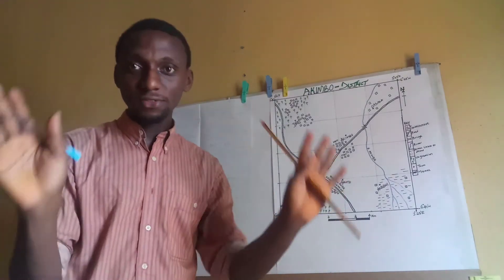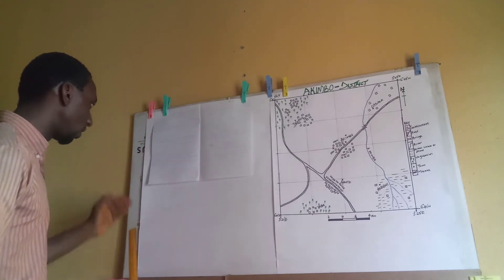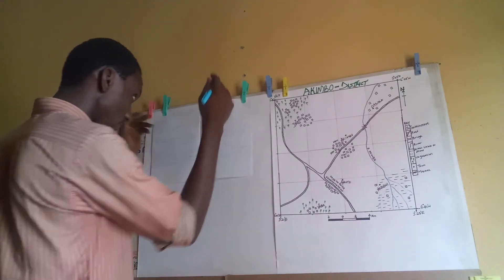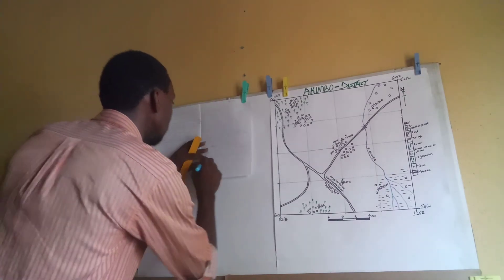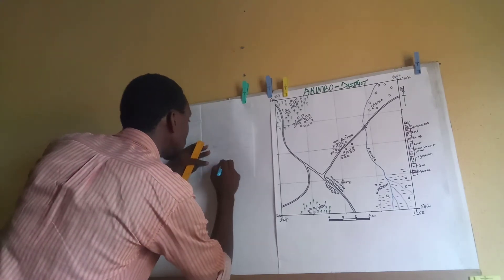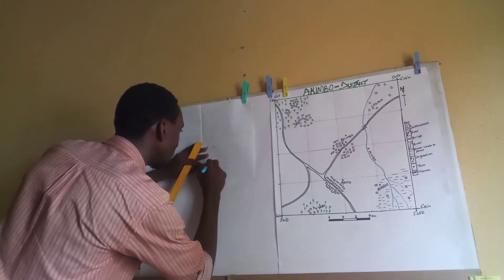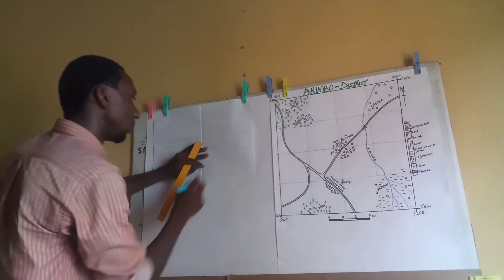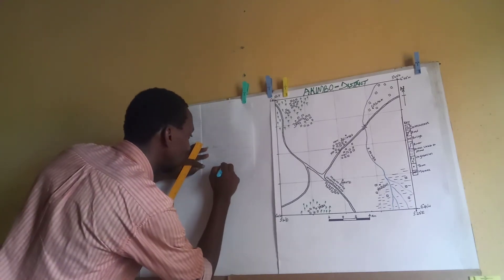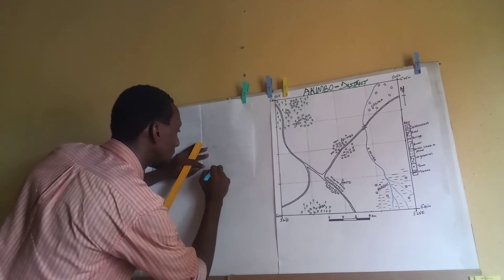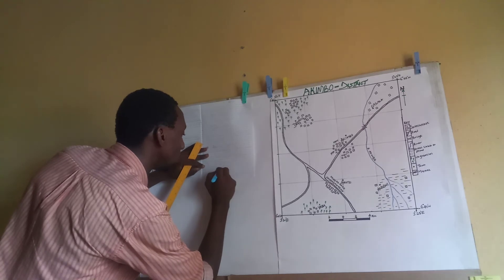The last and final step says: convert this length to distance using the scale of the map. The scale of my map says one centimeter equals 0.5 kilometers. So if one centimeter equals 0.5 kilometers, what will 25 centimeters be? Set it equal to X. Cross multiply: X equals 25 times 0.5.